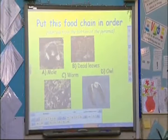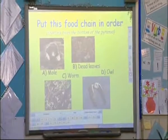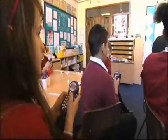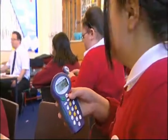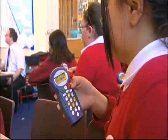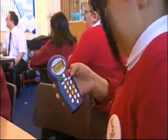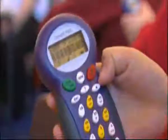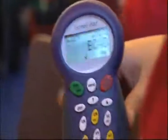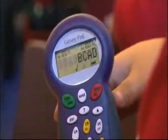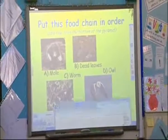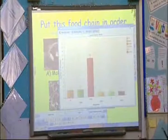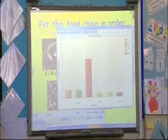Put this food chain in order, starting from the bottom upwards. We've got A, the mole; C, the worm; B, dead leaves; and D, owl. Dead leaves is at the bottom, and then we have the worms, followed by the mole and the owl. So B, C, A, D was the correct answer. Over half of you got that, so well done.